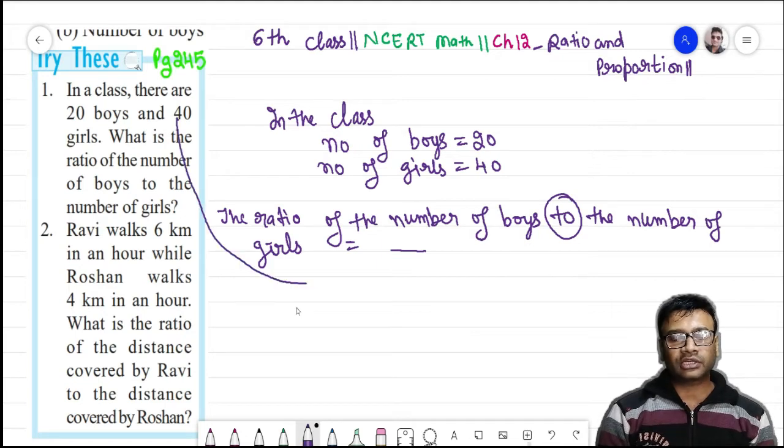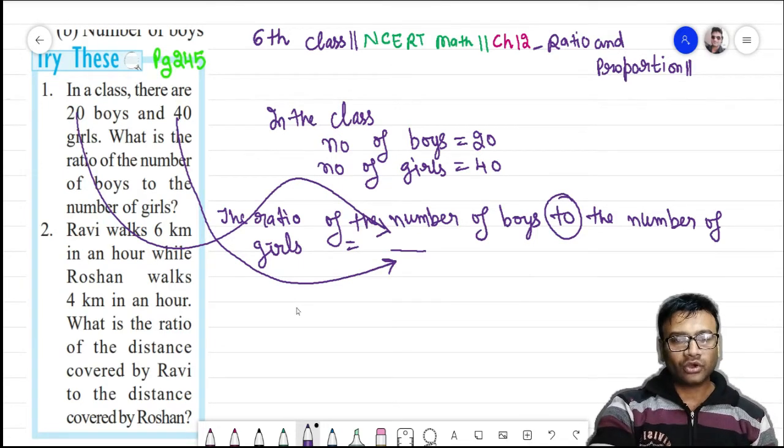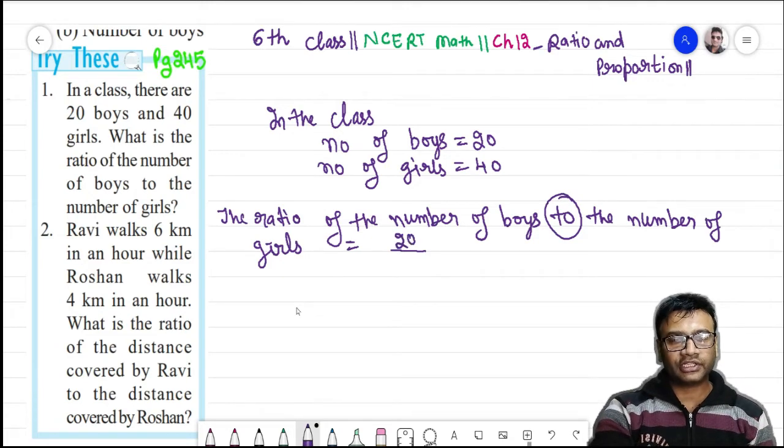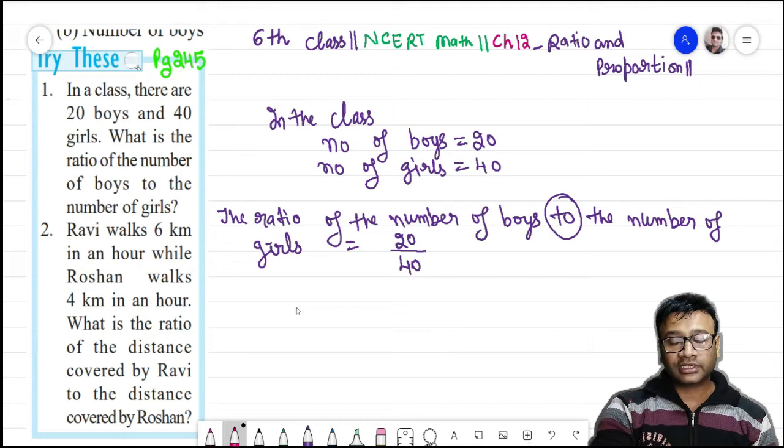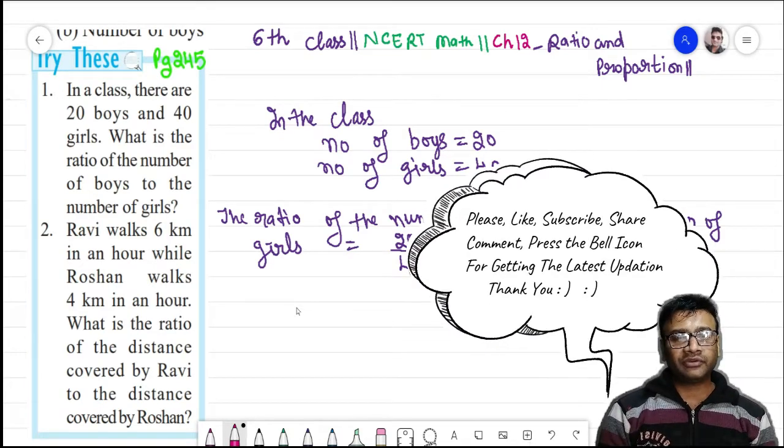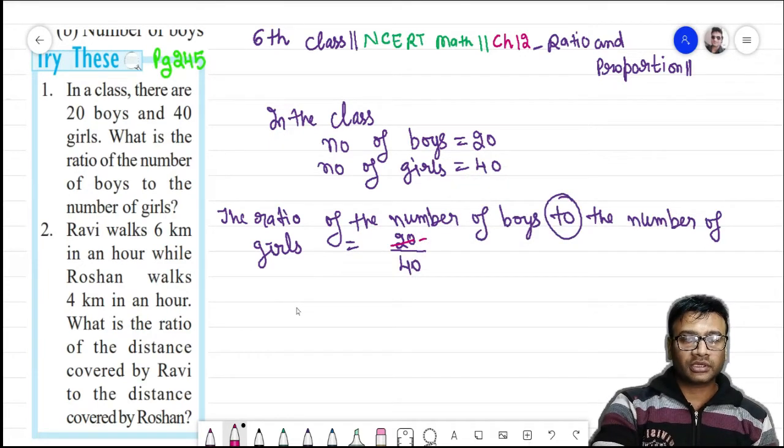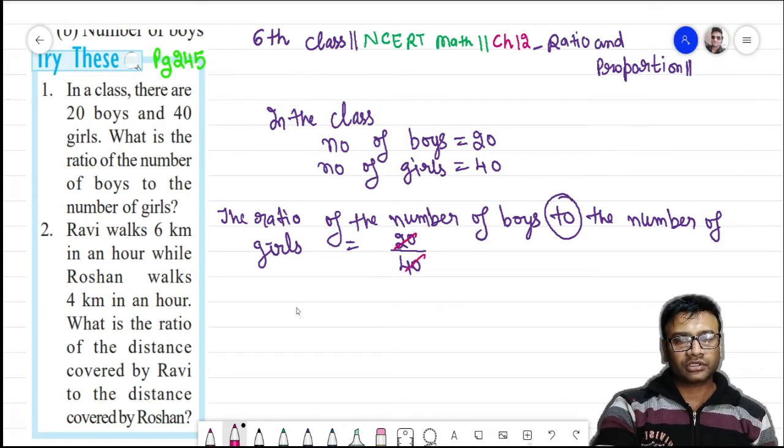It means that 40 will come here and 20 will go there. Then 20 here is 40. You will get the lowest form of this fraction. How do we get it? We will divide by 20 to both 20 and 40. We are getting 1 by 2. It means that 1 ratio 2.